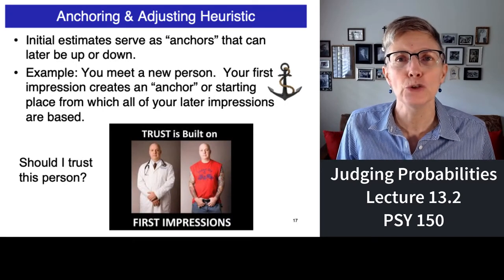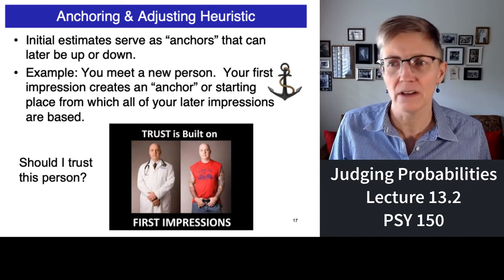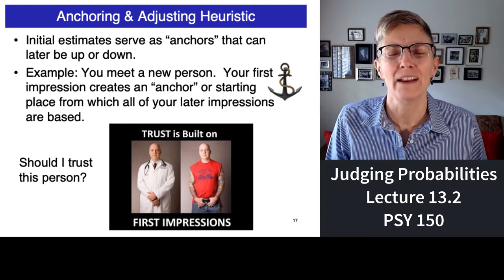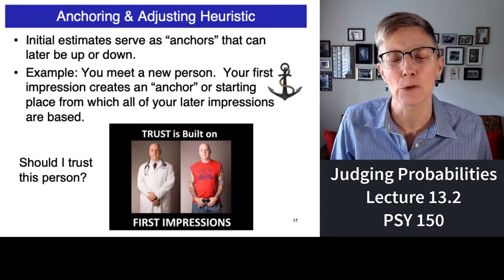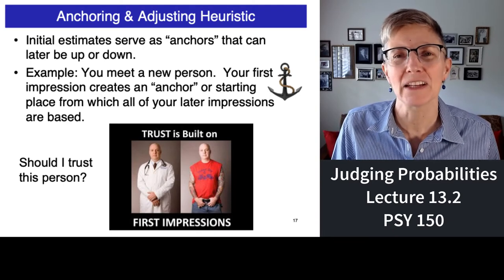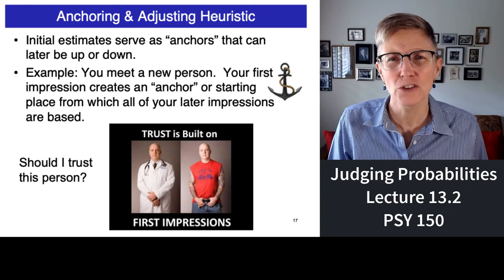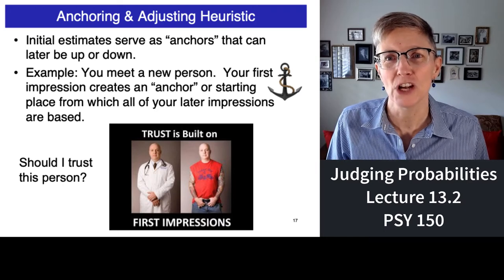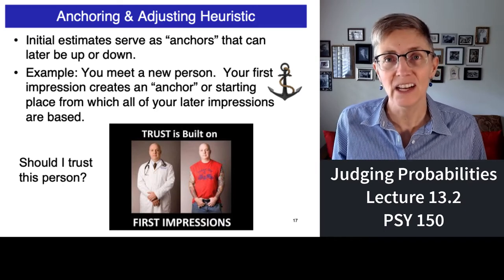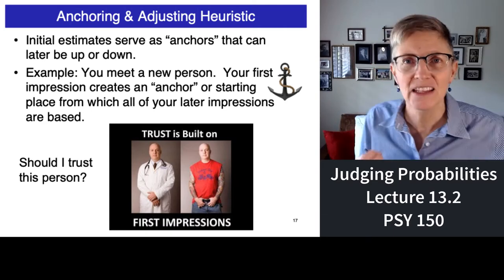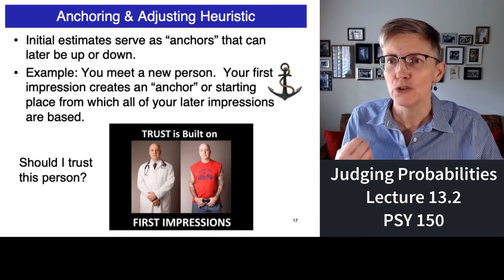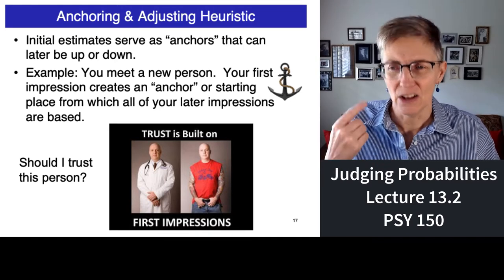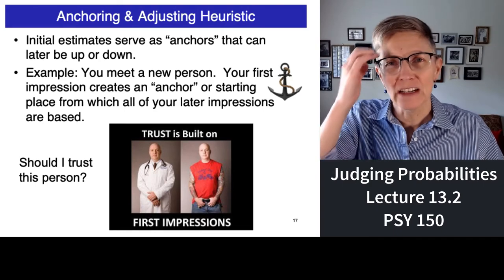Imagine you are walking down the street and one of these two people — actually it's the same person in two different outfits — is walking towards you. The question in the back of your mind is: what is the probability that this person is trustworthy? Should I trust this person? We know quite a bit about how people make those judgments on the fly, using their gut instinct to drive their decision.